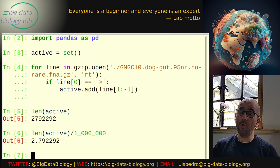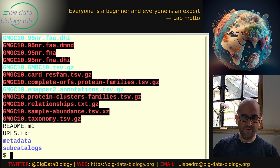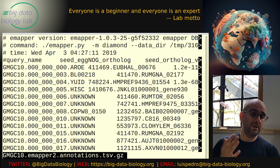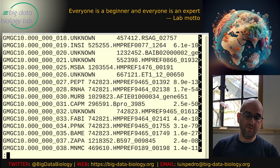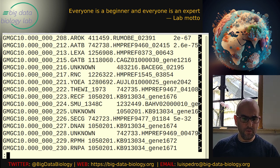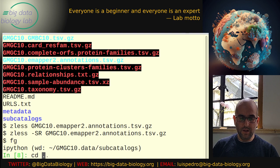Now if I look at the annotations available, there are annotations from eggNOG mapper 2. This is exactly what I was looking for — annotations for these genes. But the problem is that this file is very, very large. On my laptop I would not even be able to load it. So what I'm going to do is create a file that is a subset of this large file. Let's go back to Python.